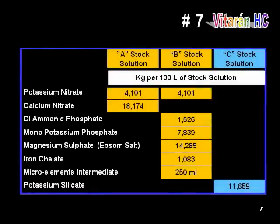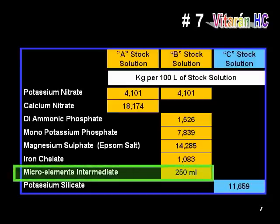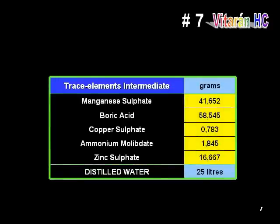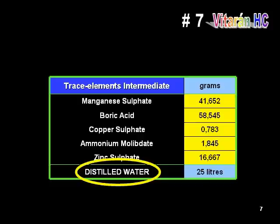On sheet number seven, we will display the stock solution formulas calculated to match your water supply in the example case that we are following. Trace elements are added to stock solution B as few milliliters of a microelements intermediate formula. Since we need to avoid any precipitation of microelements, this intermediate stock solution is prepared using distilled water as the formula indicates. Tap water or any other non-deionized water supply should not be used to prepare this microelements stock solution. Also, in order to avoid any weighing errors, make up the trace elements mix in relatively large quantities.